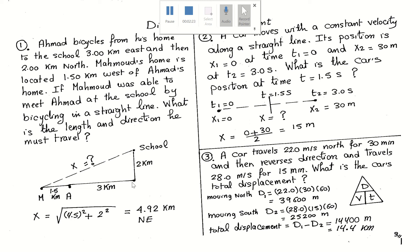If we have a right-angled triangle, then the hypotenuse x squared equals the sum of the two sides squared. Applying the Pythagorean theorem: x equals the square root of 4.5 squared plus 2 squared, which gives 4.92 kilometers. You also want to know the direction — we have east and north, so the final location is northeast.